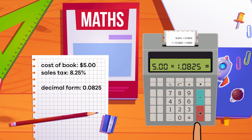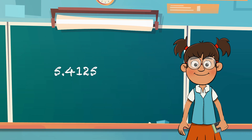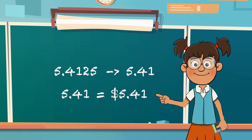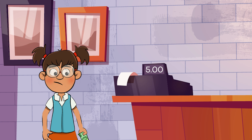This equals 5.4125. Last, she needs to round the number to the nearest hundredth. This will give her the total cost of the book, which is $5.41. So the sales tax on the $5 book equals $0.41. Kind of a cool trick, right? And since Frankie has $6, she can afford to buy the book. What great news!